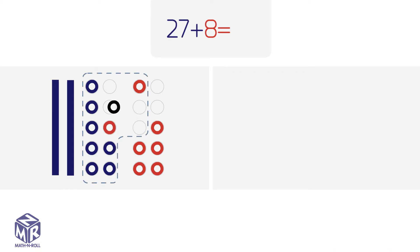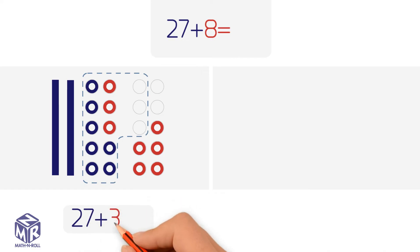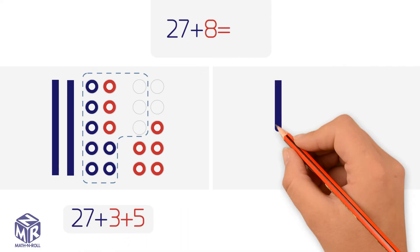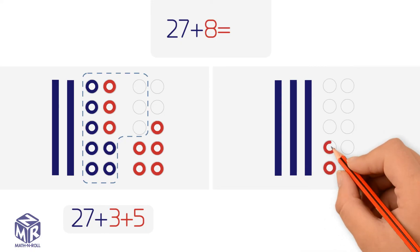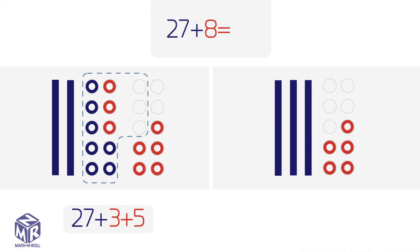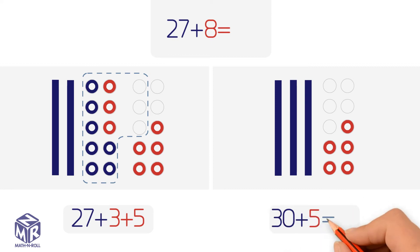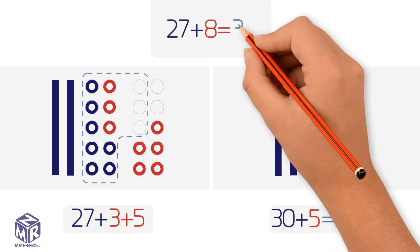What can we add to 7 to make a 10? 3. We can break apart 8 into 3 and 5. We have 27 plus 3 plus 5. Now we have three 10s and five 1s, or 30 plus 5, which equals 35. So 27 plus 8 equals 35.